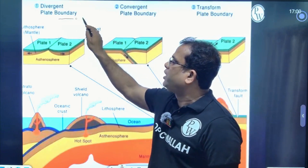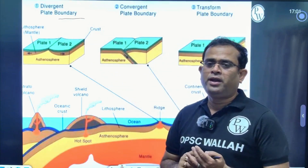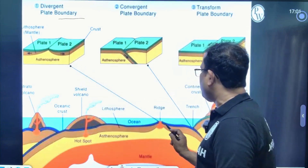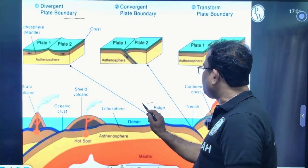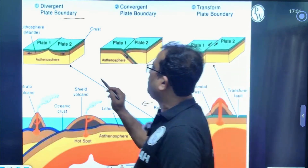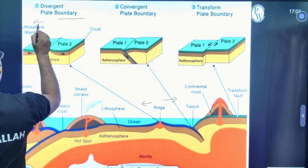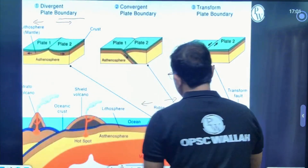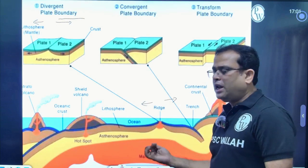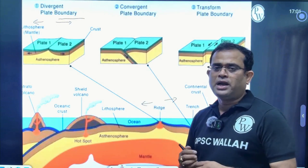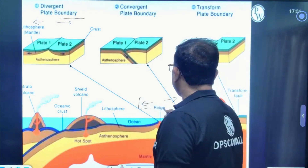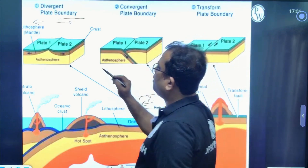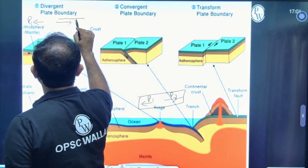Divergent plate boundaries — when plates are moving apart in opposite directions. These are your divergent plate boundaries.